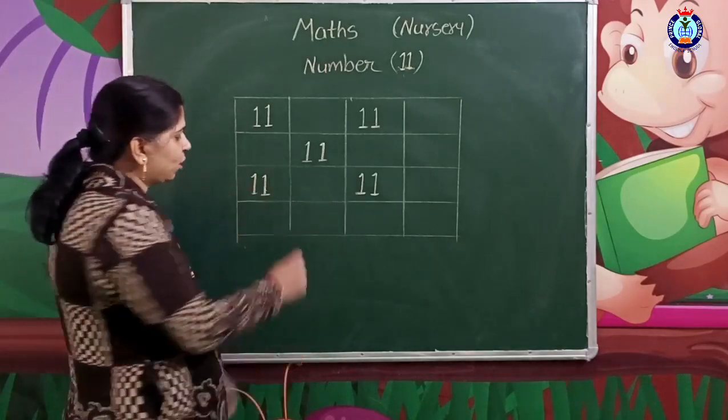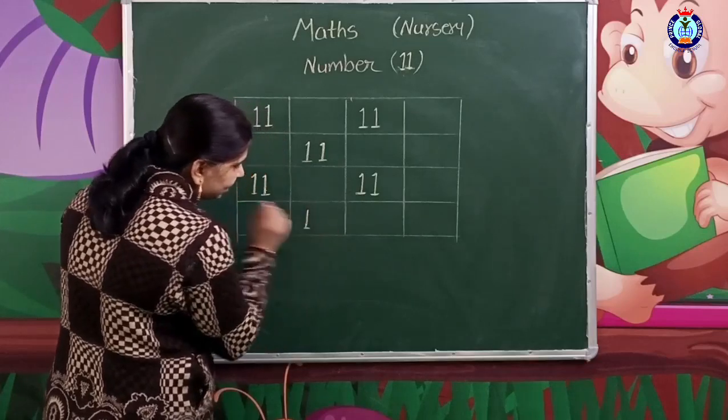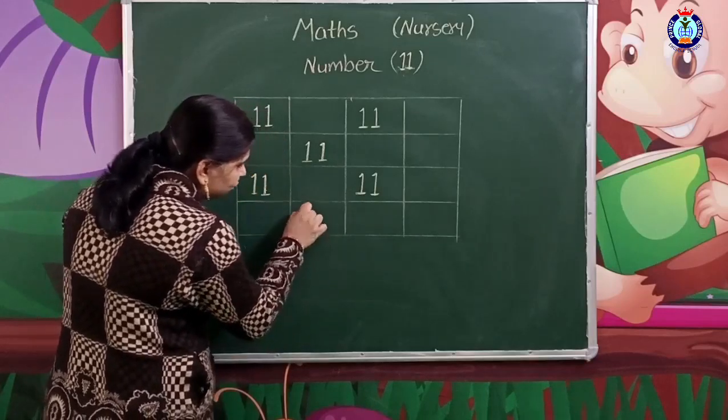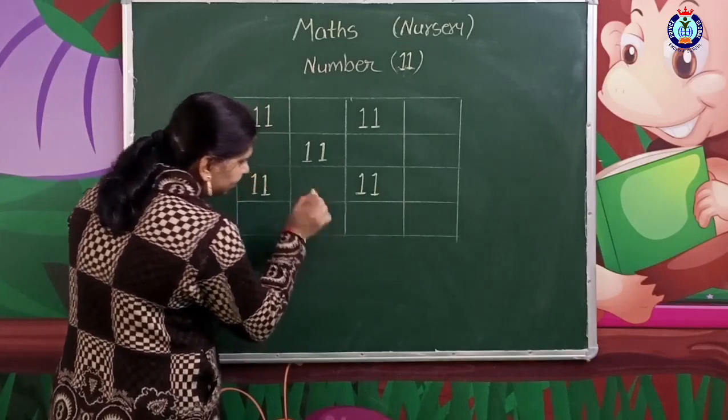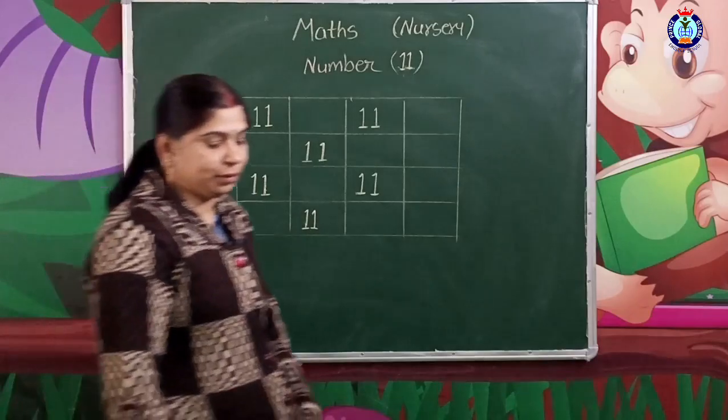To write number 11, it's easy: a standing line, a sleeping line, and a small standing line. This is our number 11.